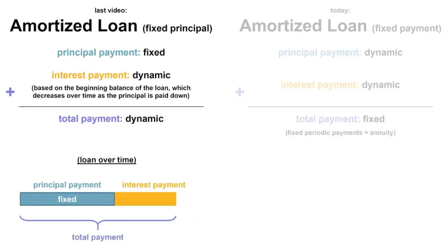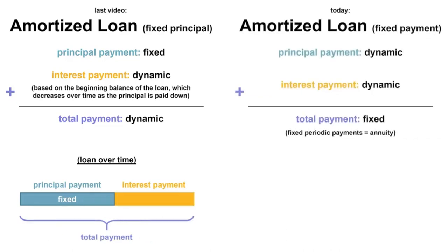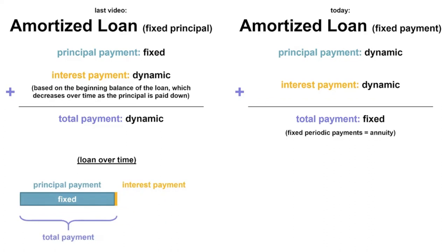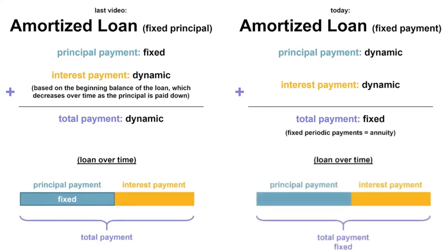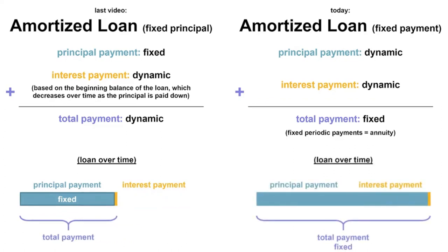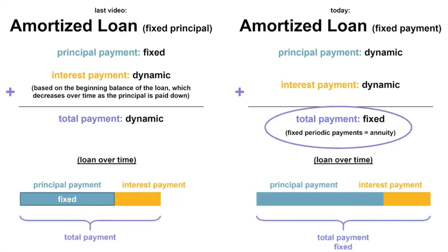In this video, we will discuss the fixed payment amortized loan. With the fixed payment amortized loan, the periodic payment amount is inclusive of the interest and principal payments. Since this type of loan has equal payments per period, they are annuities.